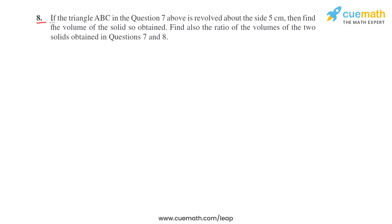In the eighth question, it is given that if the triangle ABC in question 7 above is revolved about the side 5 centimeters, then find the volume of the solid so obtained. Find also the ratio of the volumes of the two solids obtained in question 7 and 8. Let's first take a look at the question number 7.